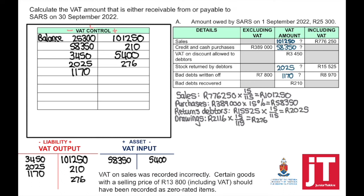VAT on sales was recorded incorrectly. Certain goods with a selling price of R13,800, including VAT, should have been recorded as zero-rated items. Remember that zero-rated items means VAT is charged at 0%. So to correct this, we take 13,800 times 15 divided by 115, which gives a VAT amount of R1,800. That means VAT output is now going to be debited with R1,800, and if VAT output is debited, the VAT control account will be debited.